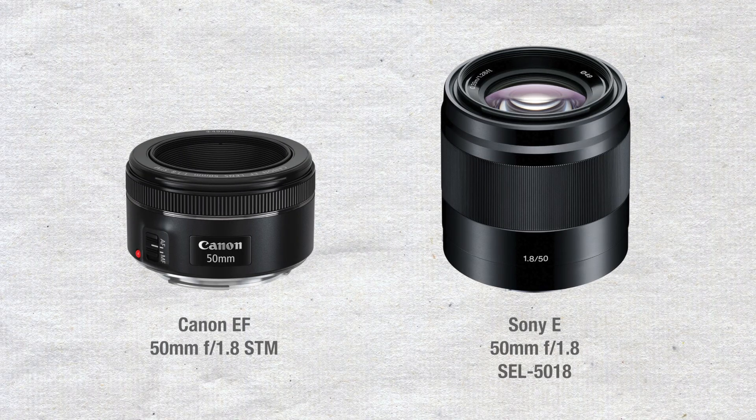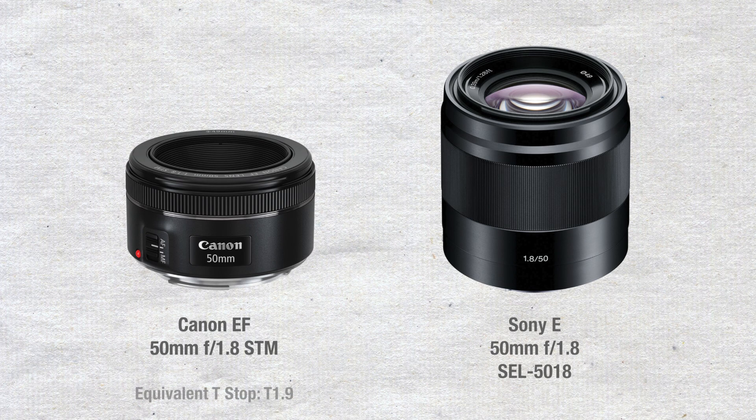For example, we have two lenses here. On the left is a Canon EF 50mm f1.8 STM lens, and on the right is a Sony E 50mm f1.8 SEL5018 lens. Now even though these lenses are letting in the exact same amount of light, the Canon lens has a transmittance of about 95%, meaning it has a t-stop of 1.9. The Sony, on the other hand, has a transmittance of about 86%, giving it an equivalent t-stop of 2.1. So even though we technically have two lenses with the same specifications, the Canon lens actually ends up letting in a lot more light through to the sensor than the Sony.